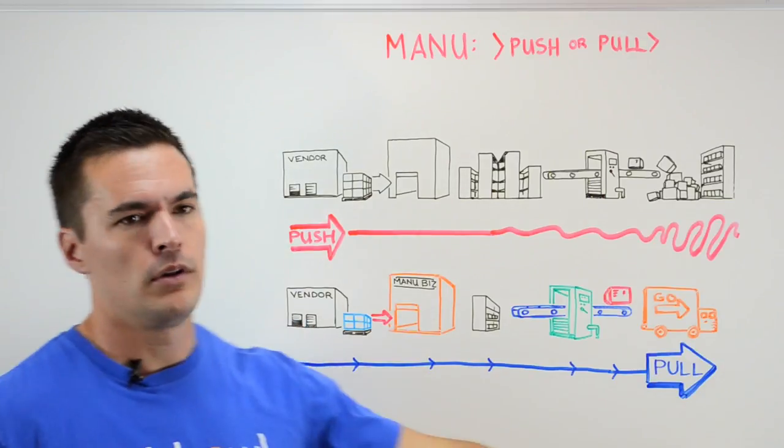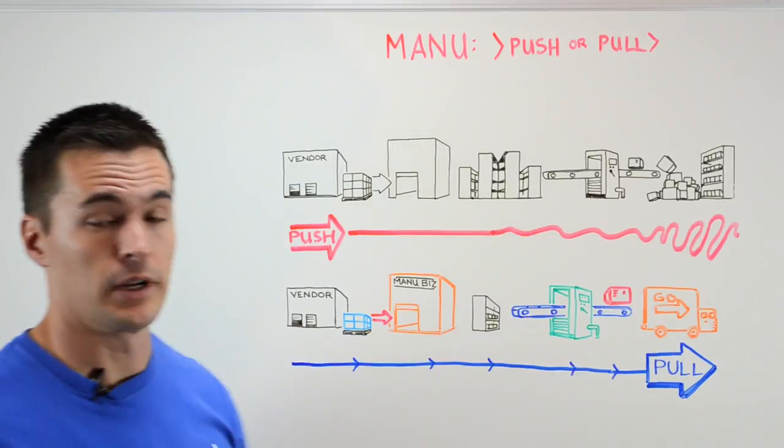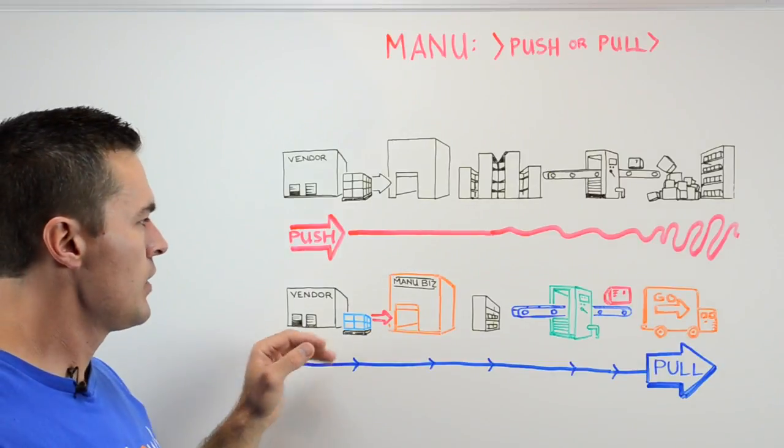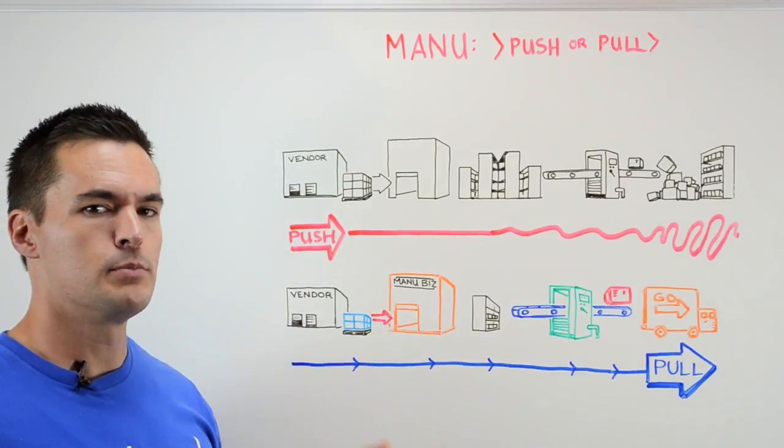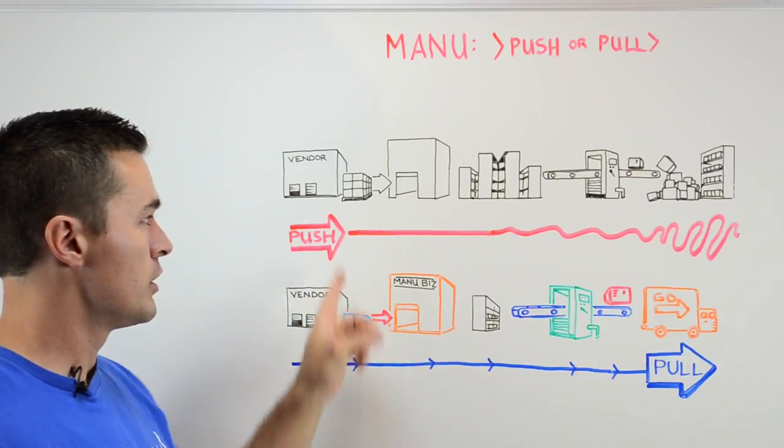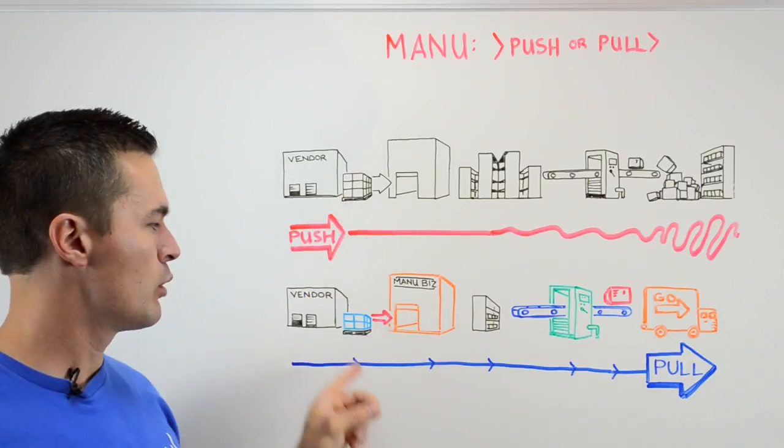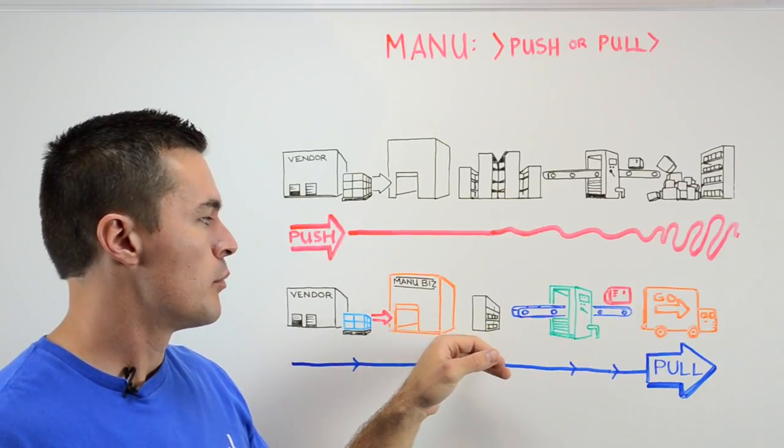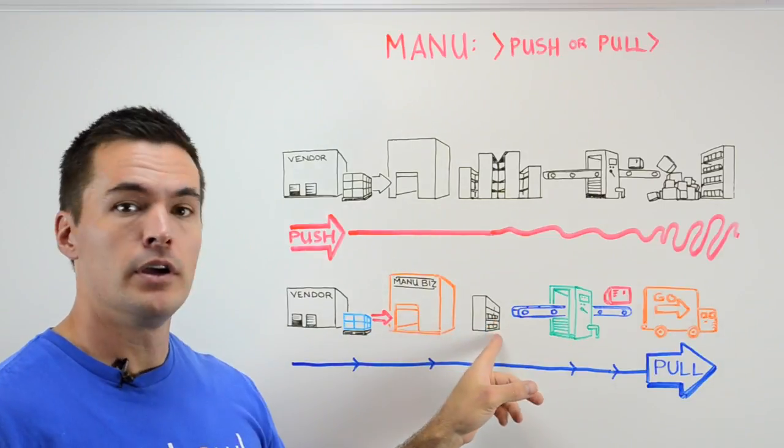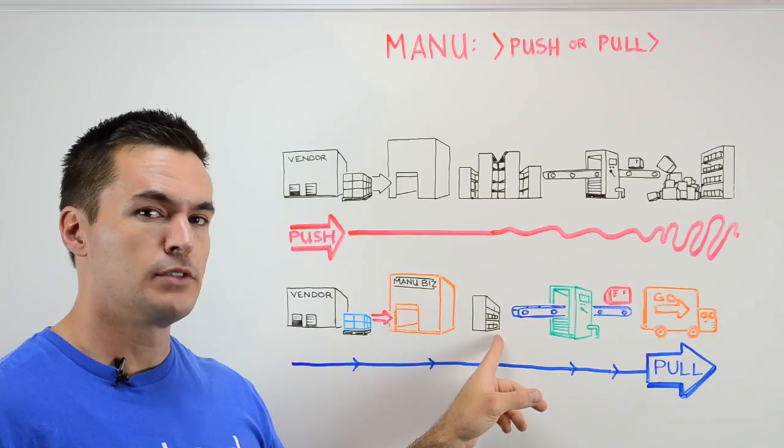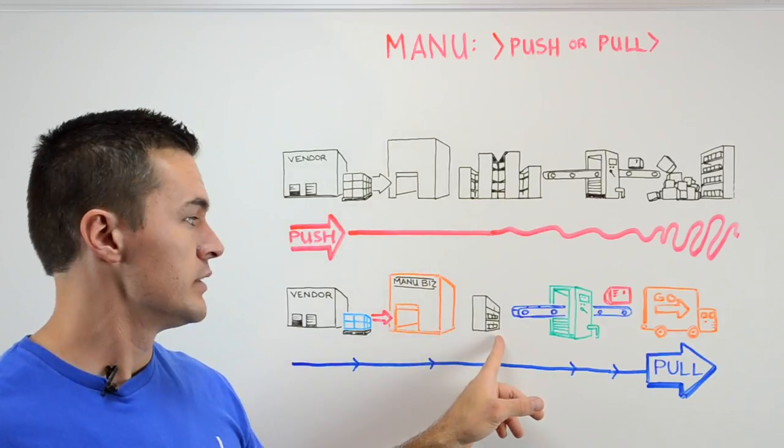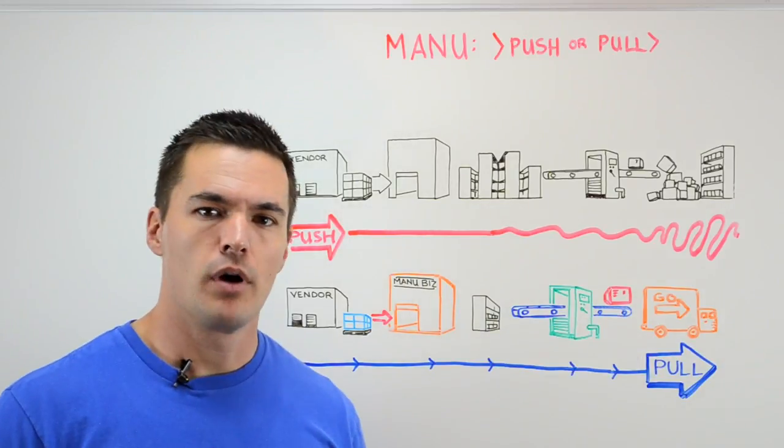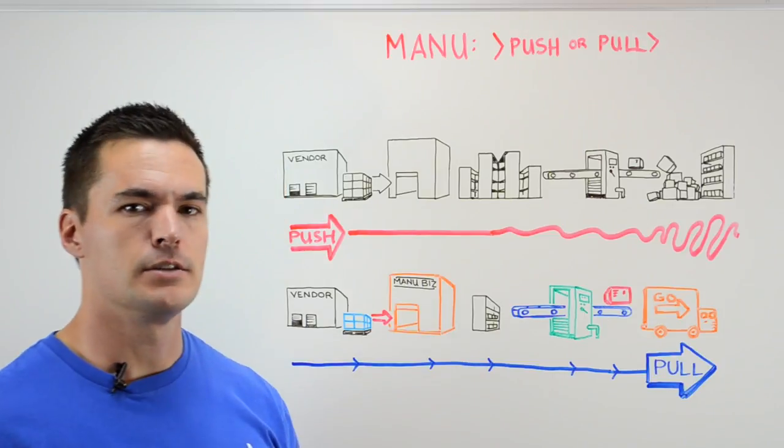But if we look at the pull side of manufacturing, same thing for the most part, but it's more efficient. From the vendor, you're not ordering just a set amount every time, you're ordering exactly what you need, because you're going to process that exact amount. You're not taking up that much storage space for raw goods or materials, and when you have that finished product, you ship it directly to the customer.